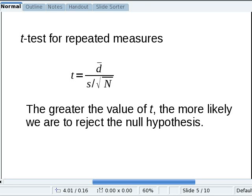Let's talk about this formula. The first thing in the numerator is d̄, the mean of the differences. The bigger this is, the bigger the value of t will be, and that makes sense.